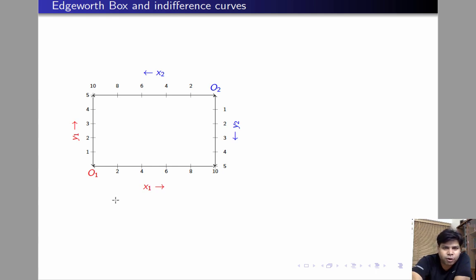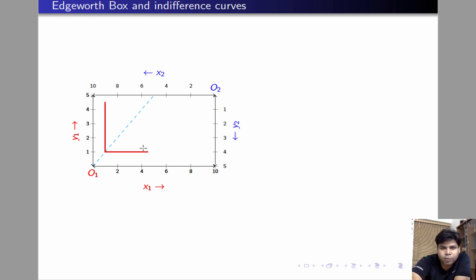Now let us plot some indifference curves of individuals 1 and 2. We are going to make a 45-degree line because the utility function is minimum x1y1, and then plot the indifference curve of individual 1 in this way. Let us now plot the indifference curve of individual 2 — this is how it's going to look.